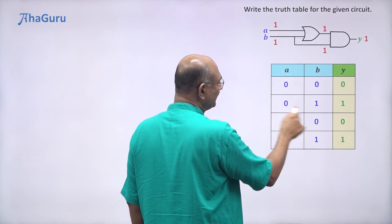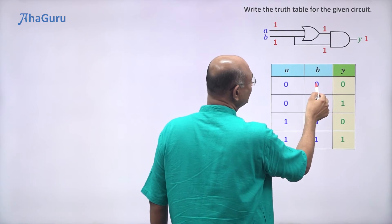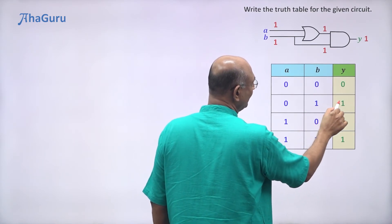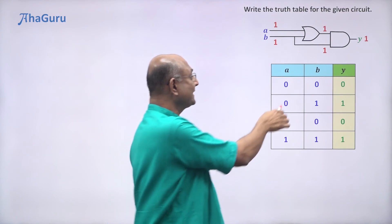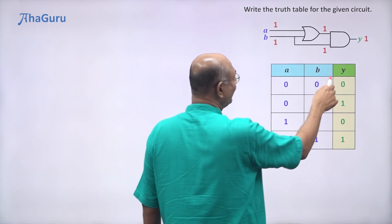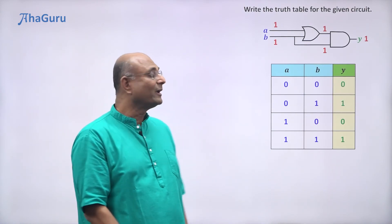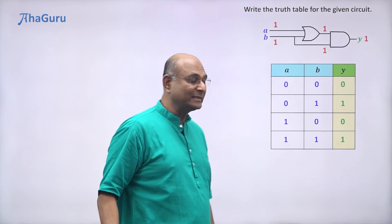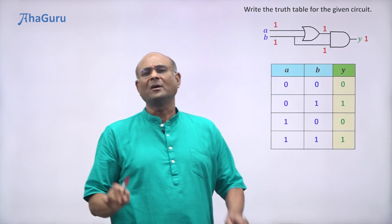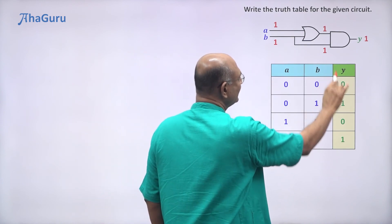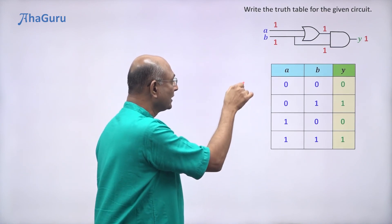Now I'd like you to notice something interesting. When B=0, Y=0; when B=1, Y=1; when B=0, Y=0; when B=1, Y=1. Actually, Y is equal to B in this case. Whenever B is zero, Y is also zero; whenever B is one, Y is also one. A doesn't matter for this particular logic circuit. We will later learn how to simplify circuits like this, but this logic circuit is simply Y equals B. That is the truth table for the given logic circuit.